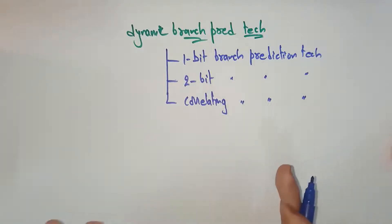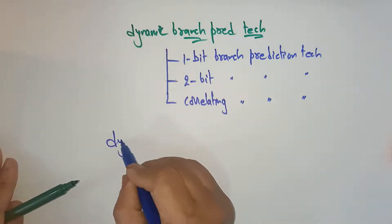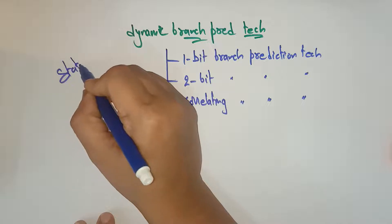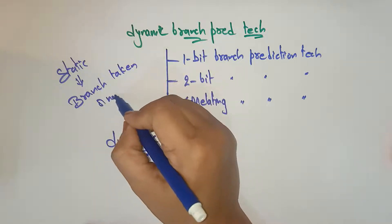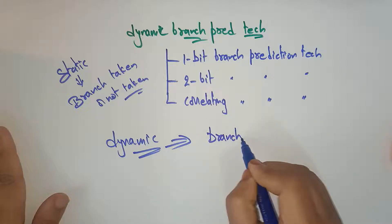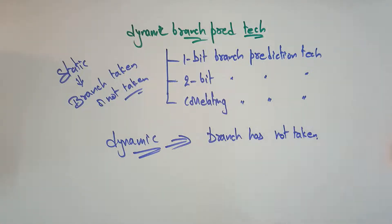Before understanding what exactly the one-bit branch prediction technique is, let me explain what dynamic branch prediction is. In static, we had seen branch taken or not taken — start with taken, and if it is wrong, flush all the pipeline and next time take not taken. Whereas in dynamic, it also assumes branch taken or not taken, and continues the next step as it is.